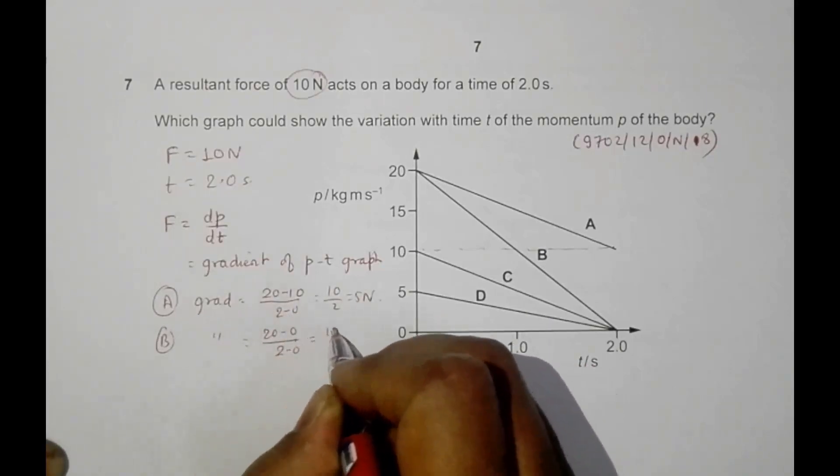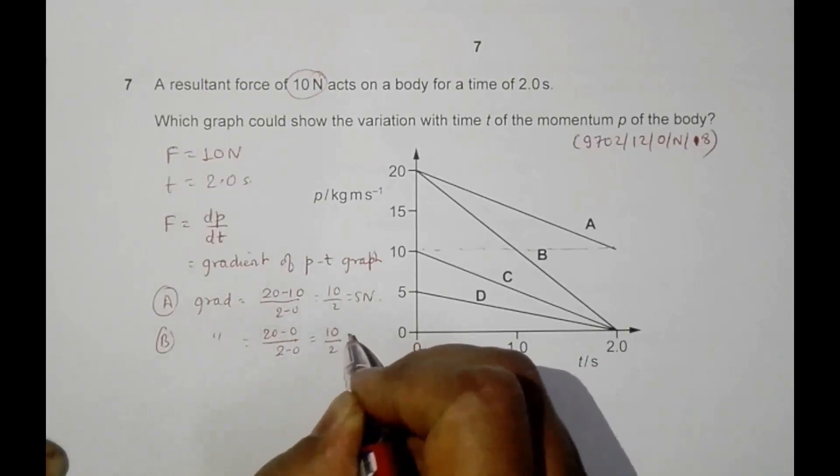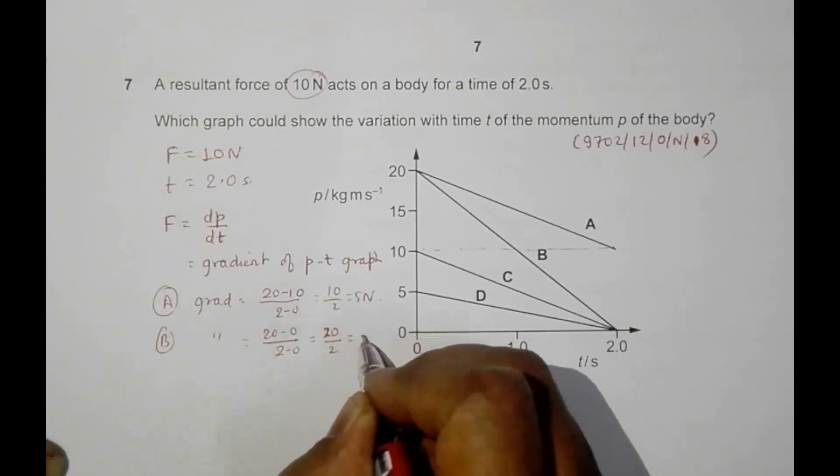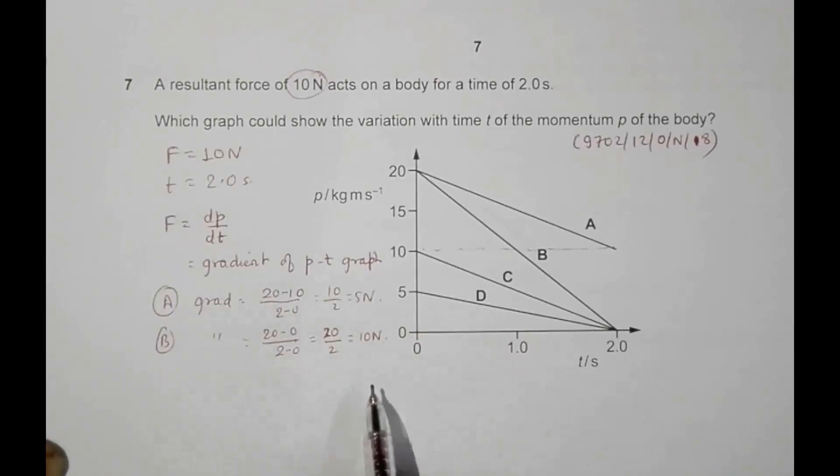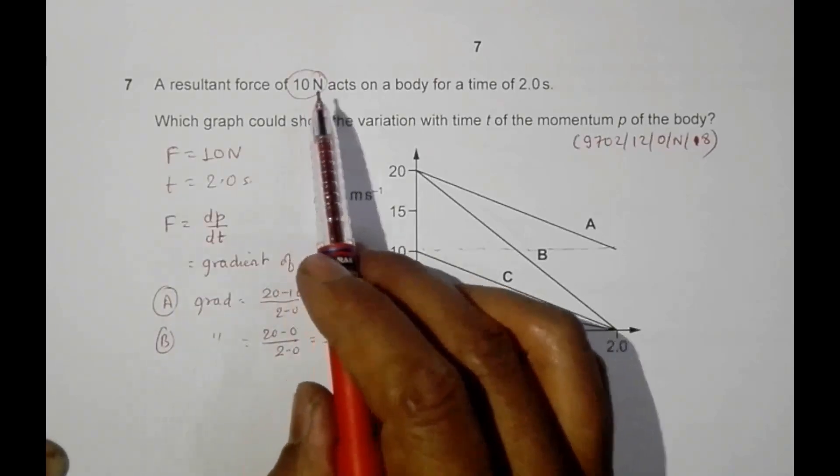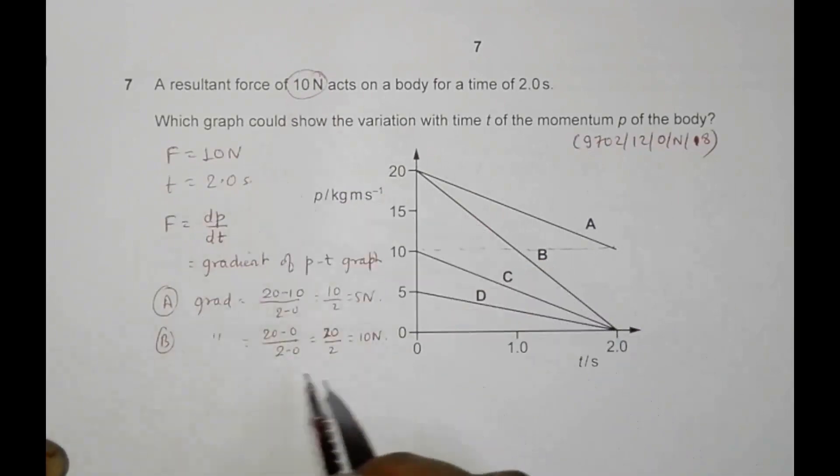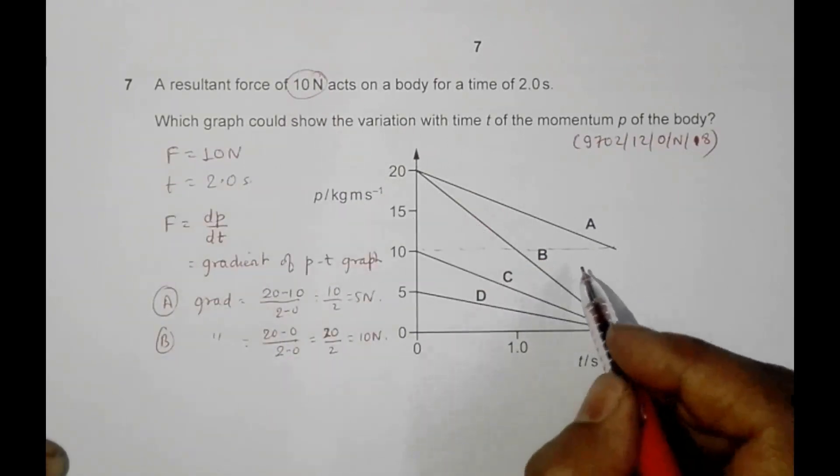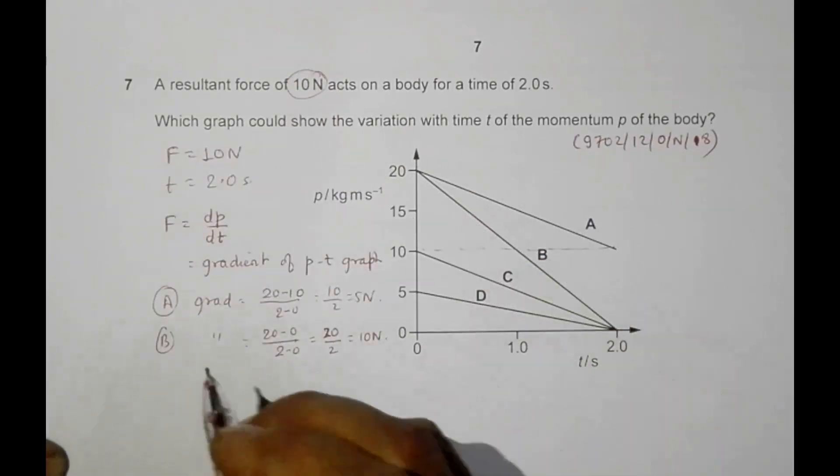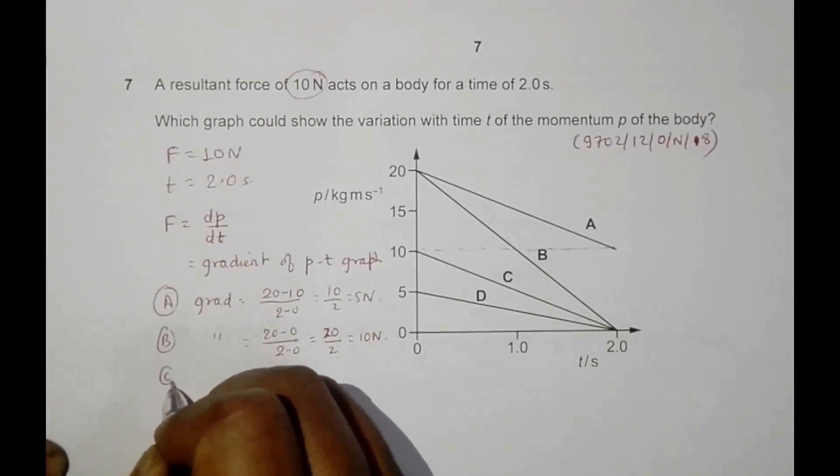So equal to, it is 20 by 2 equal to 10 Newton. So it is that the force is 10 Newton as given by the question, and the time is also 2 seconds. So choice number B seems to be correct. Let's go for choice number C as well.